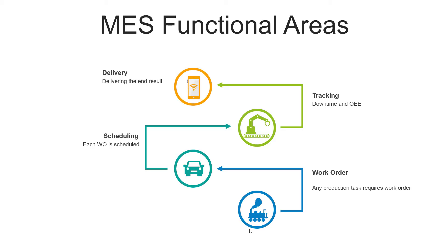The core functional areas of MES system include work order creation, because any production task on the production floor requires a work order. Work orders include different tasks and the manpower requirement for each task. Once created, each work order is scheduled — that's a core function of MES. After scheduling, tracking is very important, including monitoring downtime and OEE. The next key functional area is delivery, where you deliver the end result.